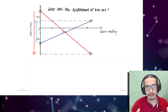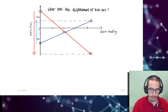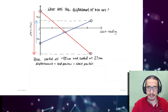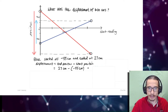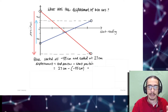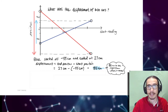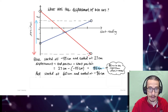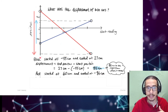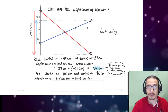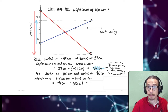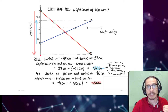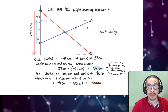Now let's find the displacement of both cars — different from distance. Blue car: started at negative 55 cm, ended at 27 cm. Displacement = end position − start position = 27 − (−55) = +82 cm. The positive sign means the car moved 82 centimeters to the right of where it started. Red car: started at 60 cm, ended at negative 96 cm. Displacement = −96 − 60 = −156 cm, meaning the red car ended up 156 centimeters to the left of where it started.